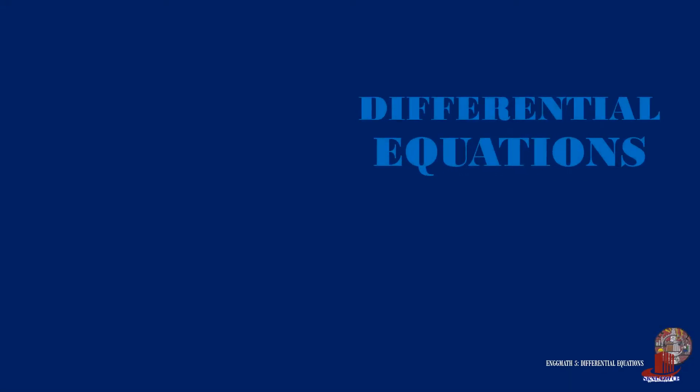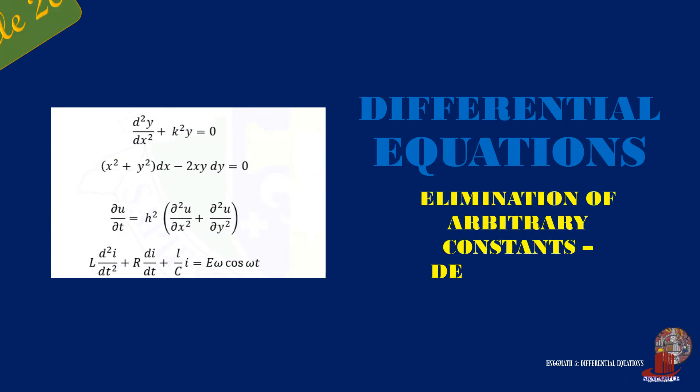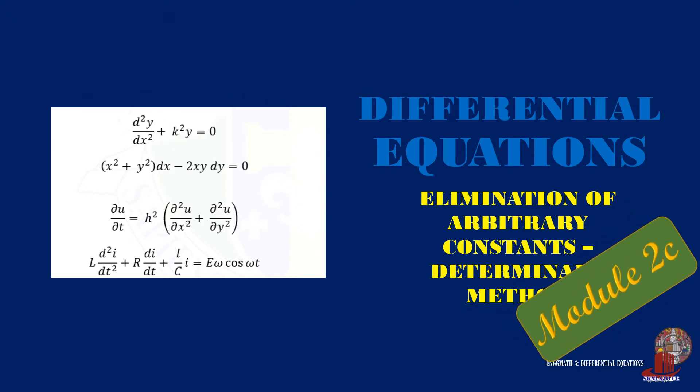The determinant method is a procedure of simplifying a differential equation using a matrix which makes solutions shorter than using the method of elimination. Learn about it here in Engineering Math 5.